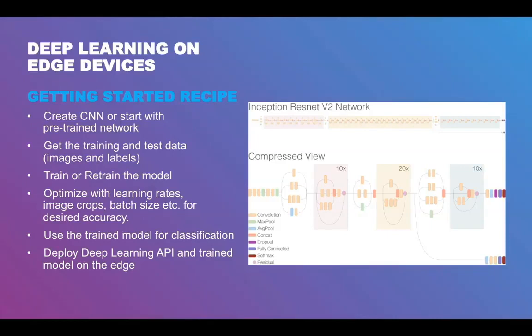Coming up with the right set of hyperparameters is one of the toughest parts in deep learning. Once you get the desired level of accuracy, you can use this model for classification. For TensorFlow, the generated model is an object graph. Next, you would deploy the TensorFlow API and the trained model on the edge gateway and use the classification code for classifying objects.